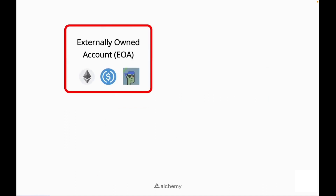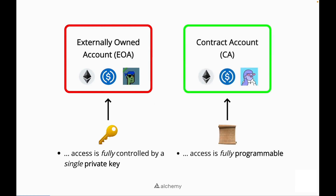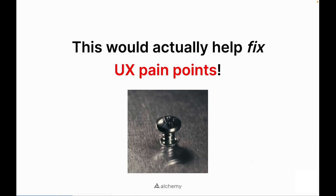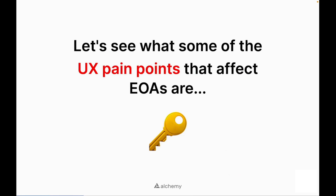Access to assets in an EOA is fully controlled by a single private key, whereas for contract accounts, access is fully programmable. Some account holders have asked: can my account have the same programmability as contract accounts do? This would actually help fix a lot of user experience pain points in Ethereum. Let's see what some of the UX pain points that affect EOAs are.